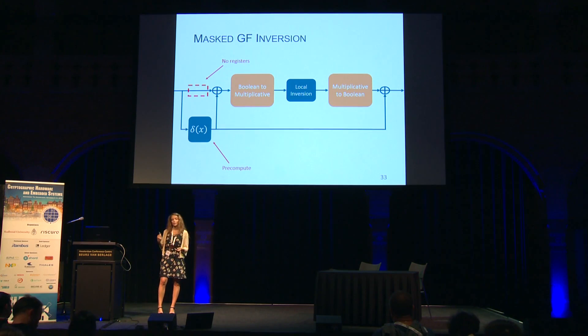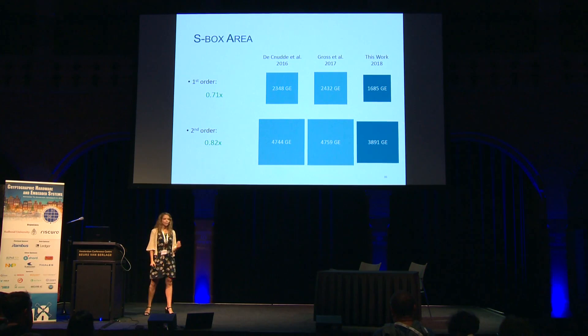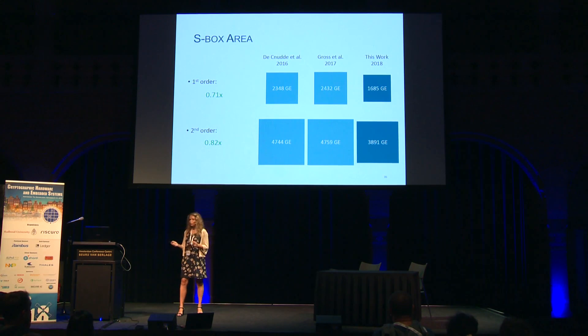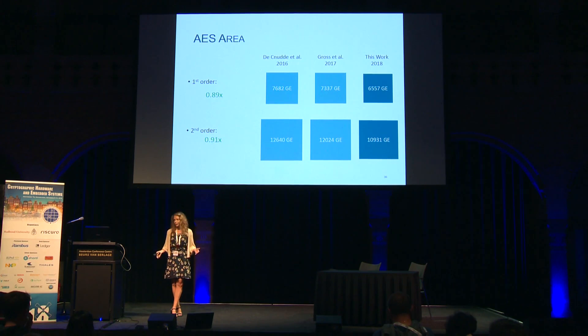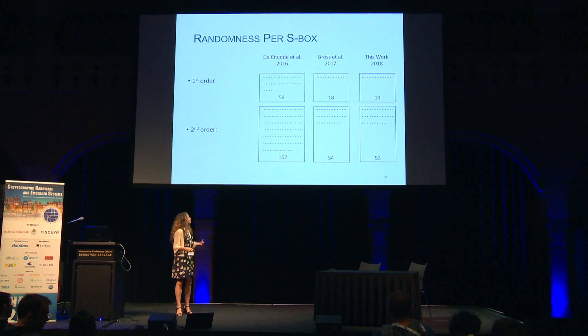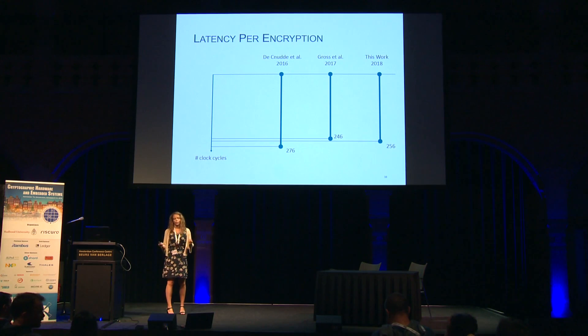Looking at the results: our S-box is 29% smaller in first order and 18% smaller in second order. For the entire AES implementation, we achieve about a 10% improvement for both orders. Our randomness cost is comparable to Gross and co-authors' results, and latency does not differ much from the state of the art.